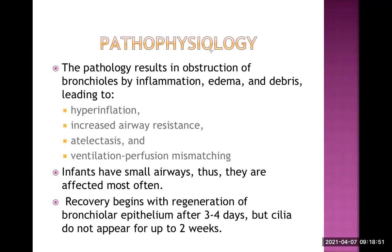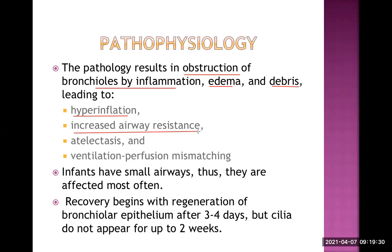The pathology results in obstruction of the bronchioles by inflammation, edema, and cellular debris collected after necrosis. These lead to hyperinflation — lungs are filled with a lot of air, overinflated. There is increased airway resistance because of airway narrowing; the lumen of the airway becomes narrowed, leading to increased airway resistance.